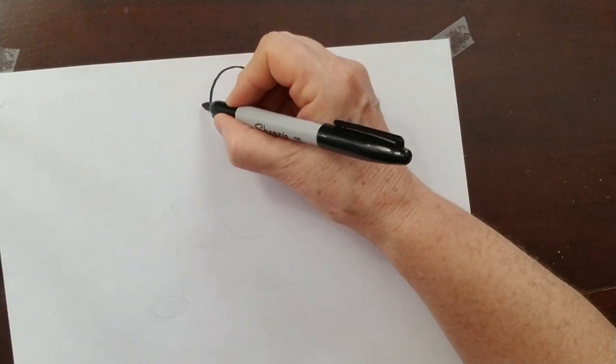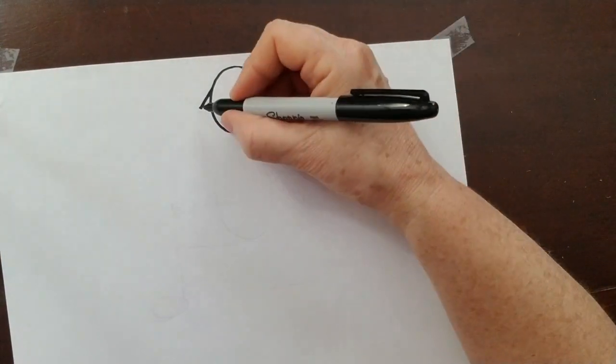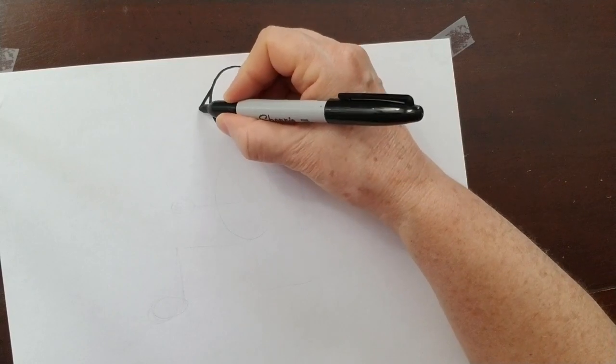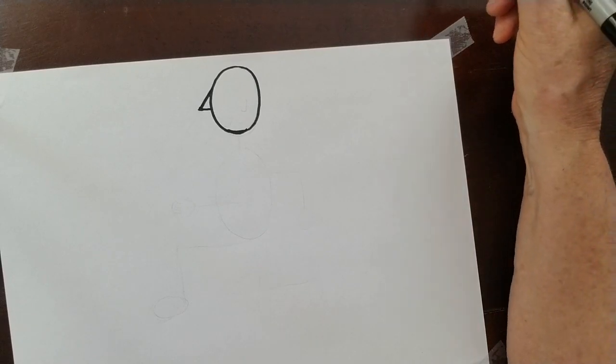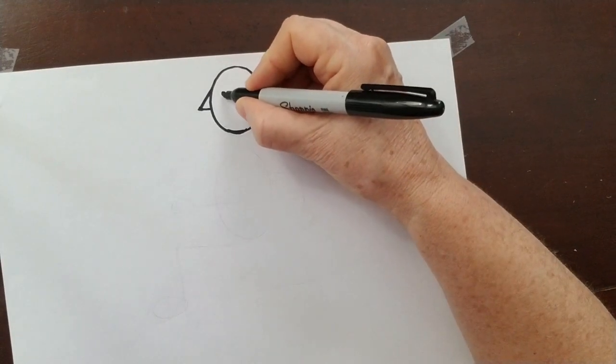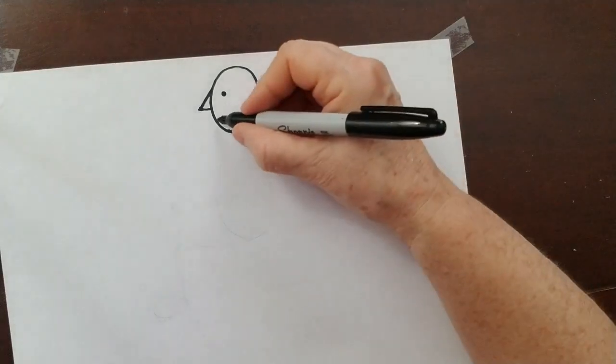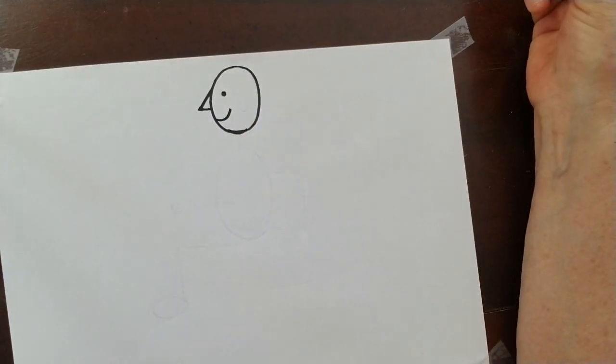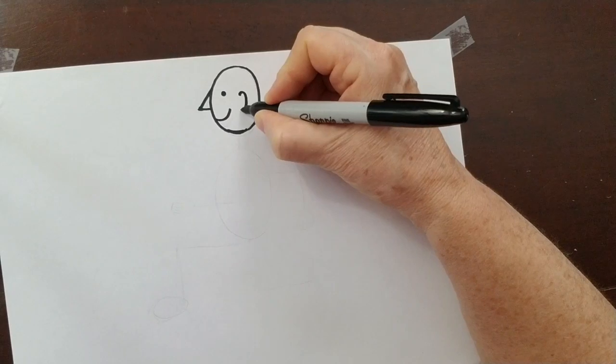Next step, we're going to do the nose. It's a diagonal and a horizontal. Next step, we're going to do an eye. And a mouth. An ear curves around.